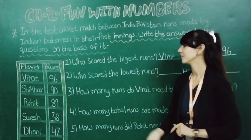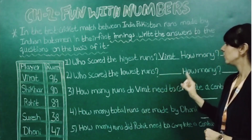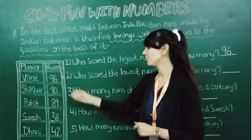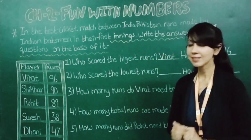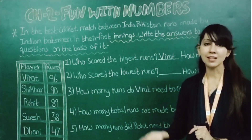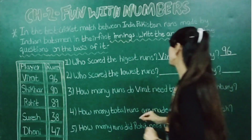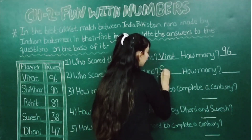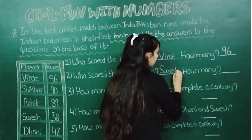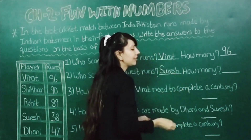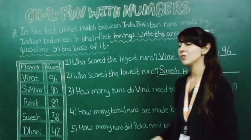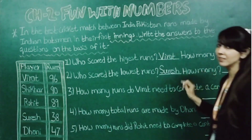Now we are going to the next question: who scored the lowest runs? So in this blank you will write Suresh. In this blank we will write Suresh. Now how many? He has made 38 runs. So in this blank we will write 38.